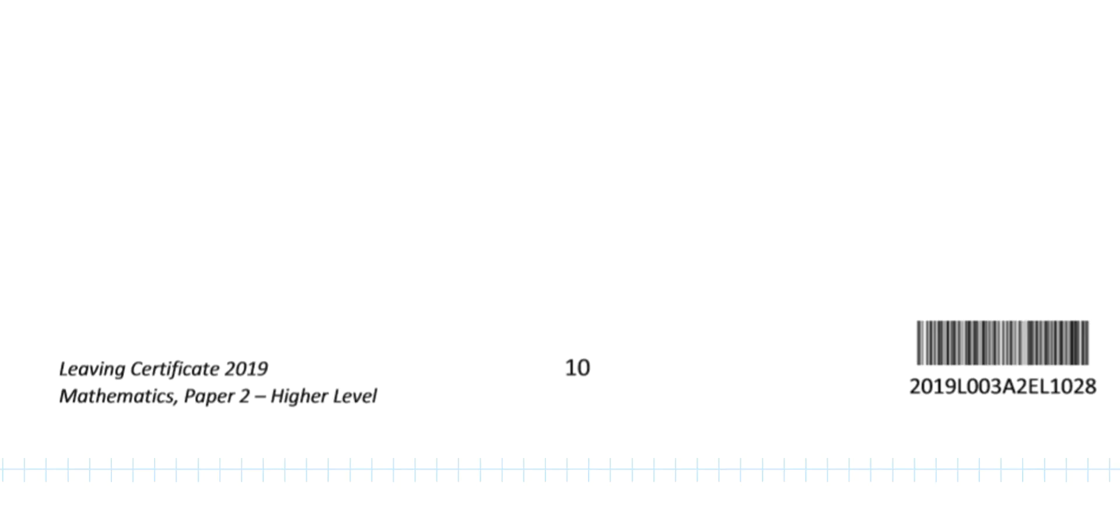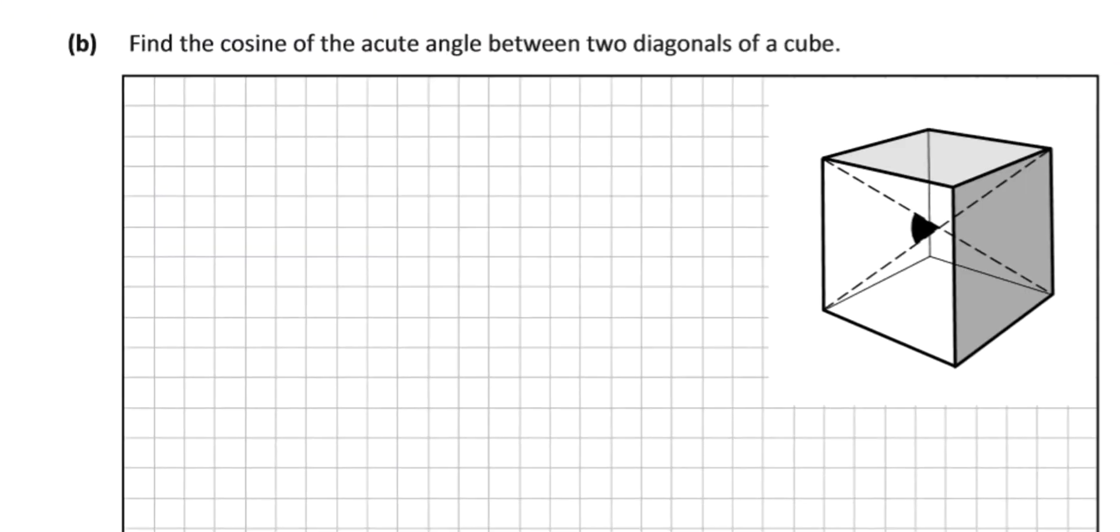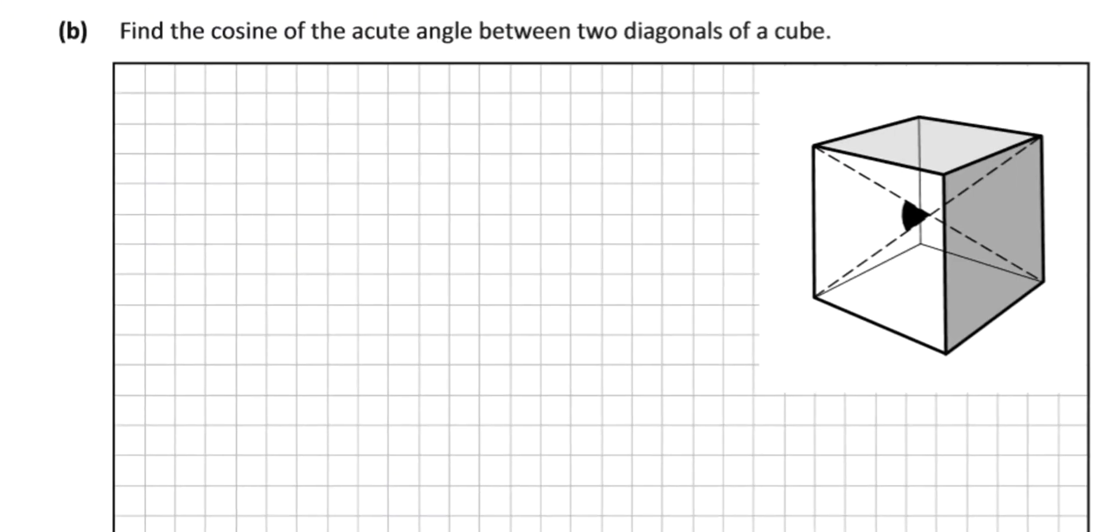The second part of the question is a little bit strange and confused a lot of people to begin with. So find the cosine. We're looking for the cos of the acute angle. We're looking for the cos of this angle, θ. So cos θ is equal to question mark. We're doing the two diagonals of the cube. So we know it's a cube, so we can describe all the sides as being the same length. You could describe that side as being x.